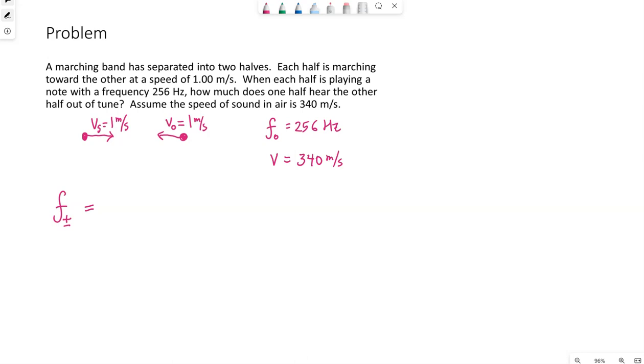Since we're moving towards the other half, we're assuming we will hear something higher. So we're just writing out the equation for the Doppler effect for sound that allows us to have both the observer and the source moving.